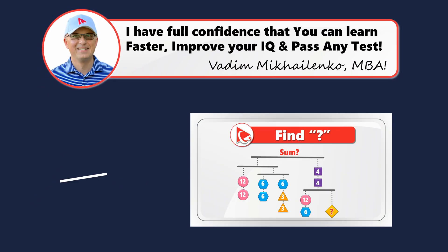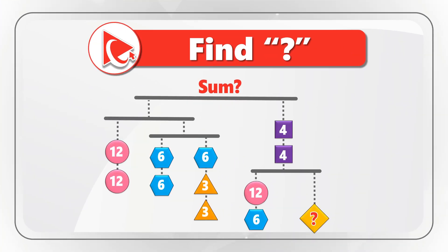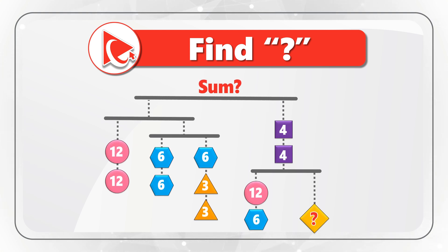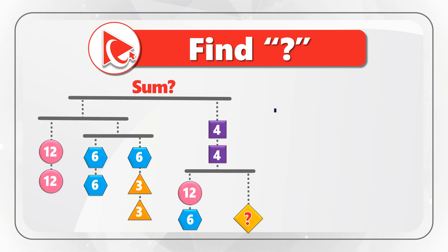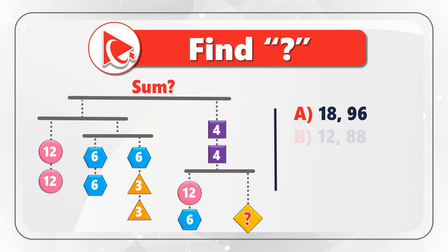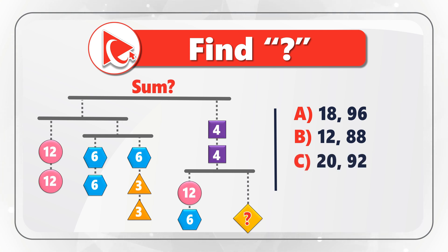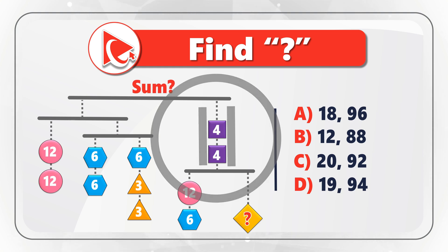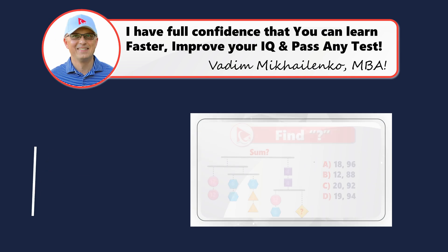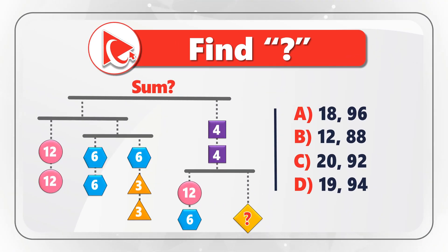Here's an amazing problem where you need to exercise your brain and cognitive skills by calculating not just one number, but two. You are presented with a scale where the value of a diamond as well as the sum values are missing. You need to ensure the scale remains balanced by calculating those values, then select one of four choices: choice A, values 18 and 96; choice B, values 12 and 88; choice C, values 20 and 92; and last but not least, choice D, values 19 and 94. Take a close look — maybe pause this video to complete the calculations.